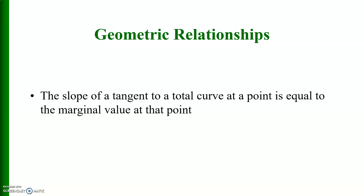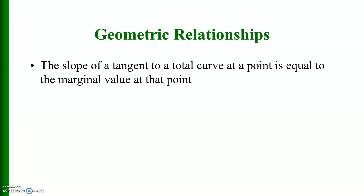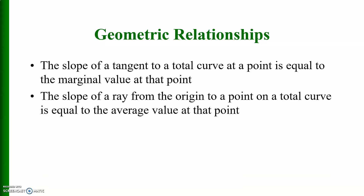There are some important geometric relationships. The slope of a tangent to a total curve at a point equals the marginal value at that point. This means if you take the slope of a tangent to a total curve at any particular point, that equals the marginal value at that particular level of output. Additionally, the slope of a ray from the origin to a point on a total curve equals the average value at that point.